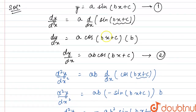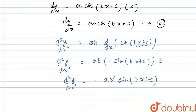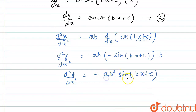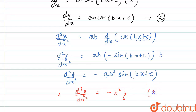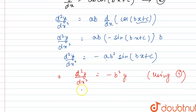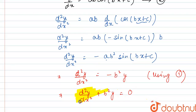Now, from equation 1 we can see that a·sin(bx + c) = y. So substituting, d²y/dx² = −b²·y. Rearranging, this becomes d²y/dx² + b²y = 0. This is our required differential equation, and we have successfully eliminated the two constants a and c.